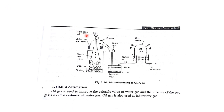Now we discuss the manufacturing of oil gas using a figure. Kerosene oil is taken in a funnel — a molten slag seal is used. There is a cast iron retort. At the bottom, a chamber contains coal which is burned to produce heat. Kerosene is added drop by drop into the cast iron retort, where the cracking process occurs.